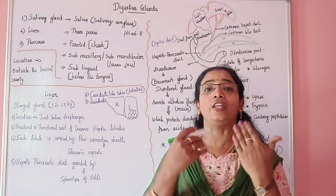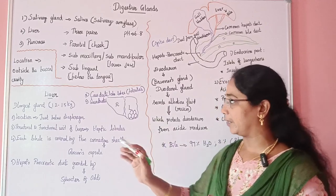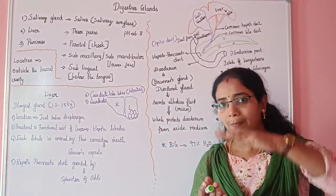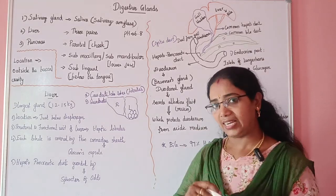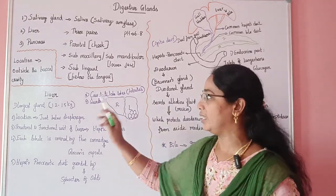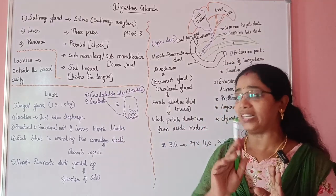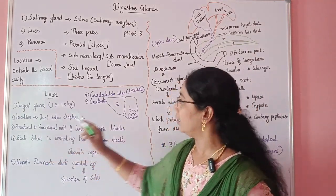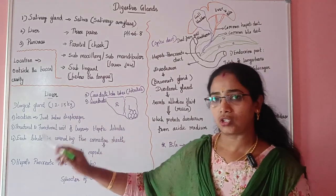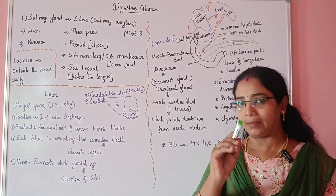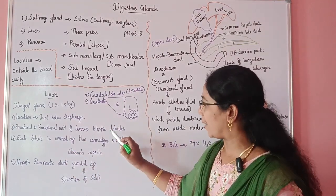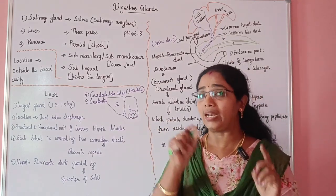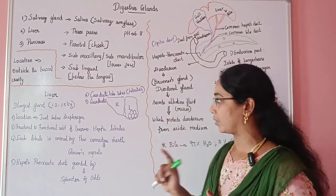The liver is located just below the diaphragm in the abdominal cavity. The structural and functional unit of the liver is the hepatic lobule.